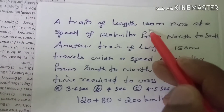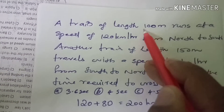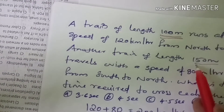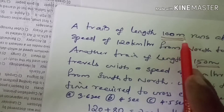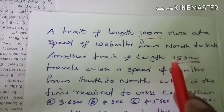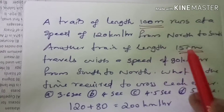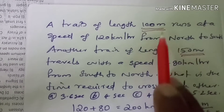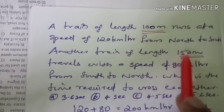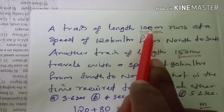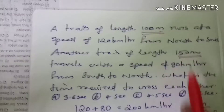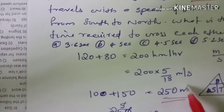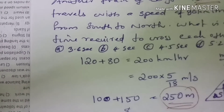What is the time required to cross each other? We are going to find the total distance — the length of the first train is 100 meters and the second is 150 meters, so total length is 250 meters. Now the length of the first train is 90 meters.